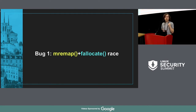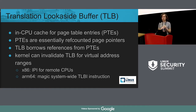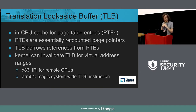The first bug is a race between the mremap and fallocate syscalls. As background: in the CPU you have the Translation Lookaside Buffer, which caches page table entries so that you can do address translations faster than always walking the page tables. While page table entries are essentially ref-counted pointers to pages, the TLB just borrows references from your page tables because the CPU isn't going to be incrementing and decrementing references on page structures. So when you're removing entries from your page tables, you need to also clear the corresponding cache entries in the TLB, otherwise you get a use-after-free.